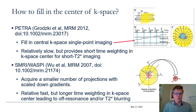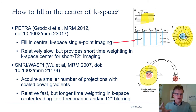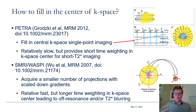Another approach, called WASP, acquires a smaller number of projections with scaled-down gradients, sampling a much smaller area of k-space — indicated by the red sphere — with the same sequence. These lower-resolution data from the smaller k-space region fill in the middle of the 3D k-space. The disadvantage is that in the center of k-space we may be going out over a relatively long time, leading to a relatively long weighting that can cause more significant off-resonance or T2* blurring artifacts.